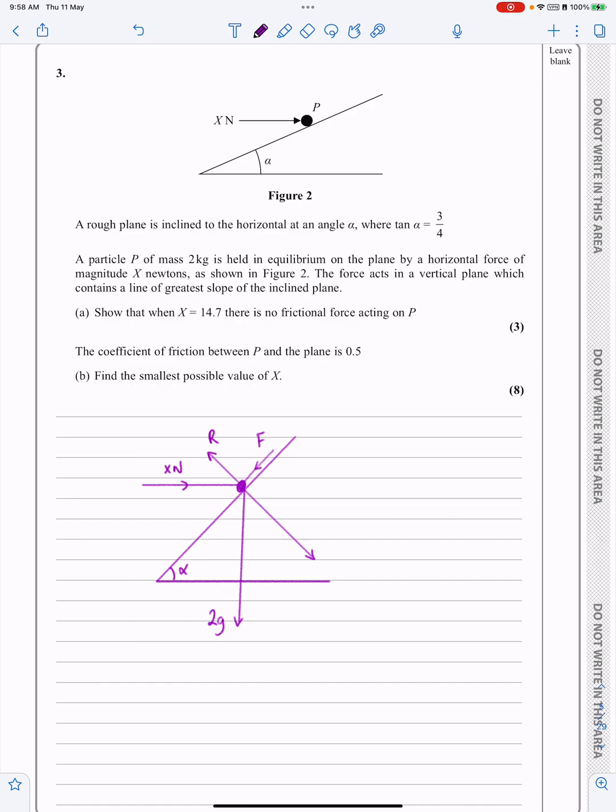If that's alpha, that angle is 90 minus alpha, which means that angle there is alpha again. I'm not going to spend any time on that. Which then means 2g is going to be broken into 2g cos alpha in that direction and 2g sin alpha in that direction.